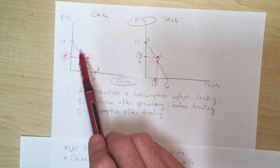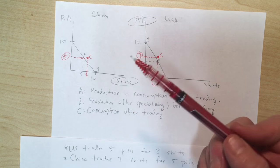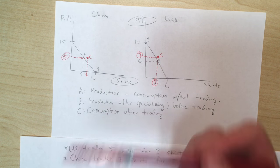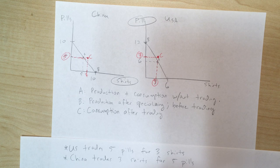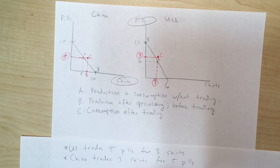In the last chapter we labeled the area beyond the PPF as 'impossible' — impossible to produce — but after trading that area becomes possible to consume. That's what makes trading so advantageous and why economists are always pro-trade and generally not fans of things that impede trade like tariffs. Trade has the ability to make just about everybody better off.